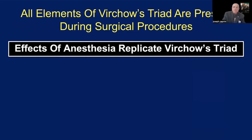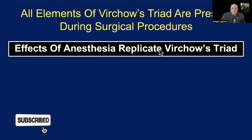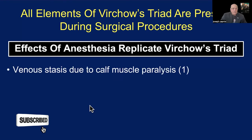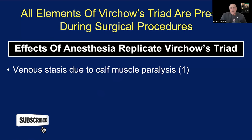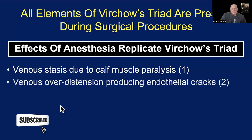All elements of Virchow's triad are present during surgical procedures. The effects of anesthesia replicate Virchow's triad. Venous stasis occurs due to calf muscle paralysis from the anesthetic, and the veins begin to dilate. As they become over-distended, endothelial cracks are produced. These were first shown by Philip Coolridge Smith in 1990 in a duplex scan experiment conducted under anesthesia.